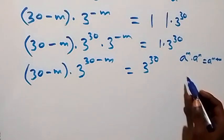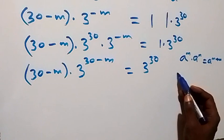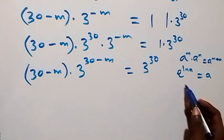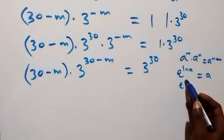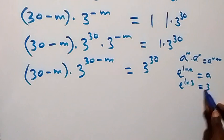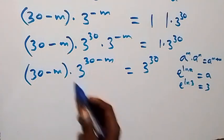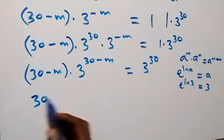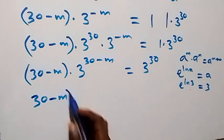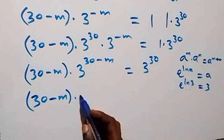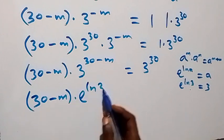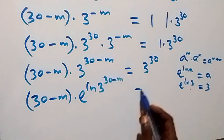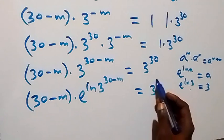From here, we can also write the 3 in the coefficient as the natural log exponential form — e to the power of ln 3. So this becomes 30 minus m times 3 raised to power 30 minus m equals 3 raised to power 30.